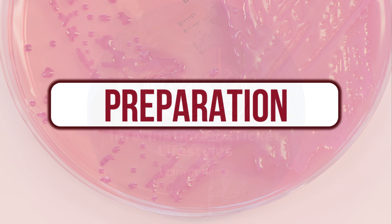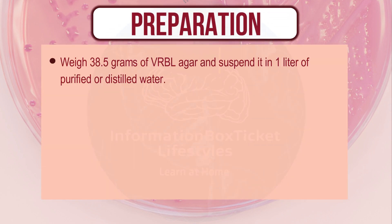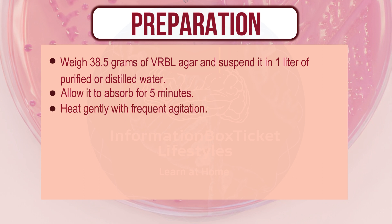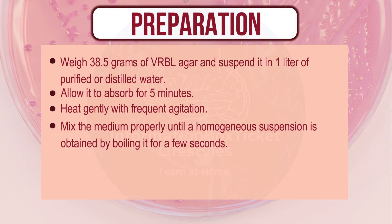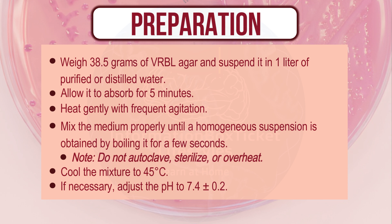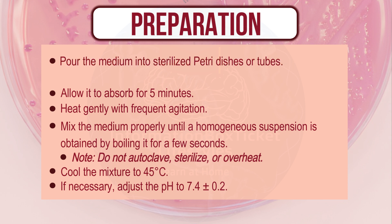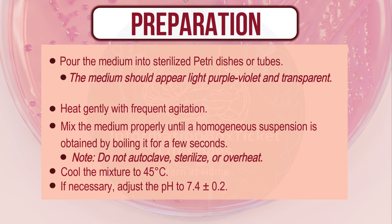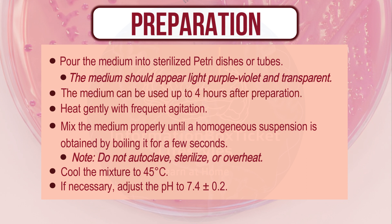Preparation of VRBL media: Weigh 38.5 grams of VRBL agar and suspend it in 1 liter of purified or distilled water. Allow it to absorb for 5 minutes. Heat gently with frequent agitation, mixing until a homogeneous suspension is obtained by boiling for a few seconds. Note: do not autoclave, sterilize, or overheat. Cool to 45°C, adjust pH to 7.4 ± 0.2 if necessary, and pour into sterilized petri dishes. The medium appears light purple-violet and transparent, and can be used up to 4 hours after preparation.